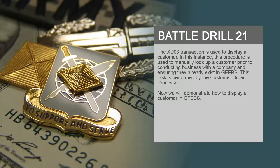The XD03 transaction is used to display a customer. This procedure is used to manually look up a customer prior to conducting business with a company and ensuring they already exist in GFIBS. This task is performed by the customer order processor. Now we will demonstrate how to display a customer in GFIBS.